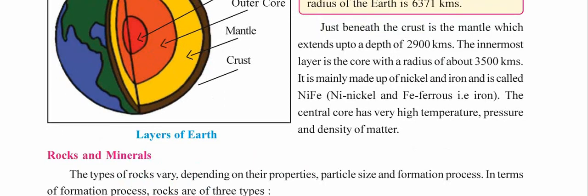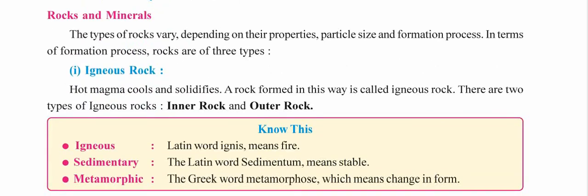Now let's move on to rocks and minerals. The types of rocks vary depending on their properties, particle size, and formation process. Based on their formation process, rocks are of three types: igneous rocks, sedimentary rocks, and metamorphic rocks. We will study about rocks based on their formation process.